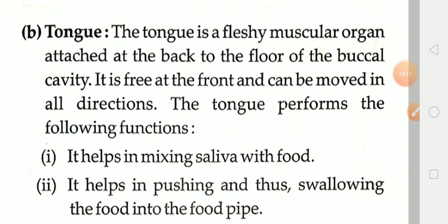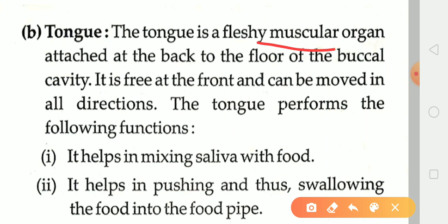Now we talk about the second part of our buccal cavity — the tongue (called 'jeeb' in Hindi). The tongue is a fleshy muscular organ attached at the back to the floor of the buccal cavity. It is made of many muscles. It is free at the front and can be moved in all directions.